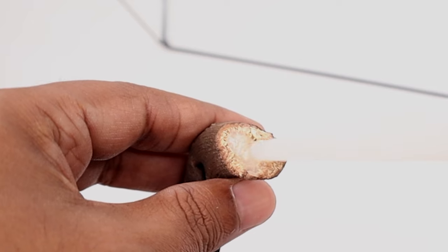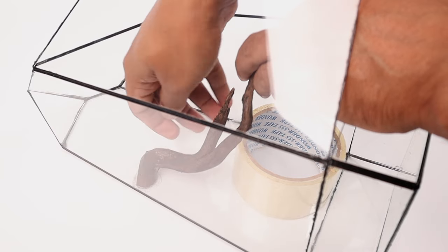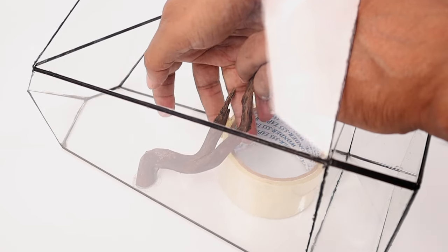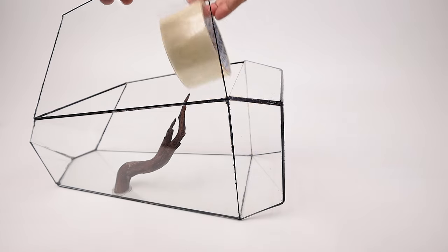I apply a dab of clear silicon sealant on the sawed end of the wood and attach it to the back wall of the container. I use a roll of tape to support the wood. After a 24 hour curing the wood is attached firmly to the glass.